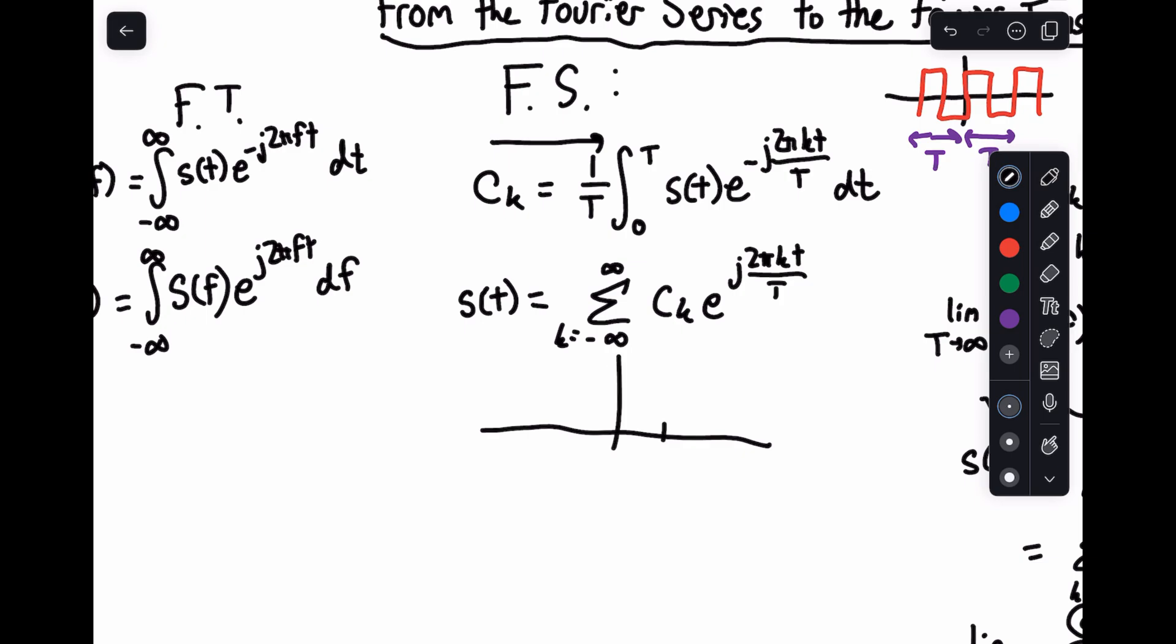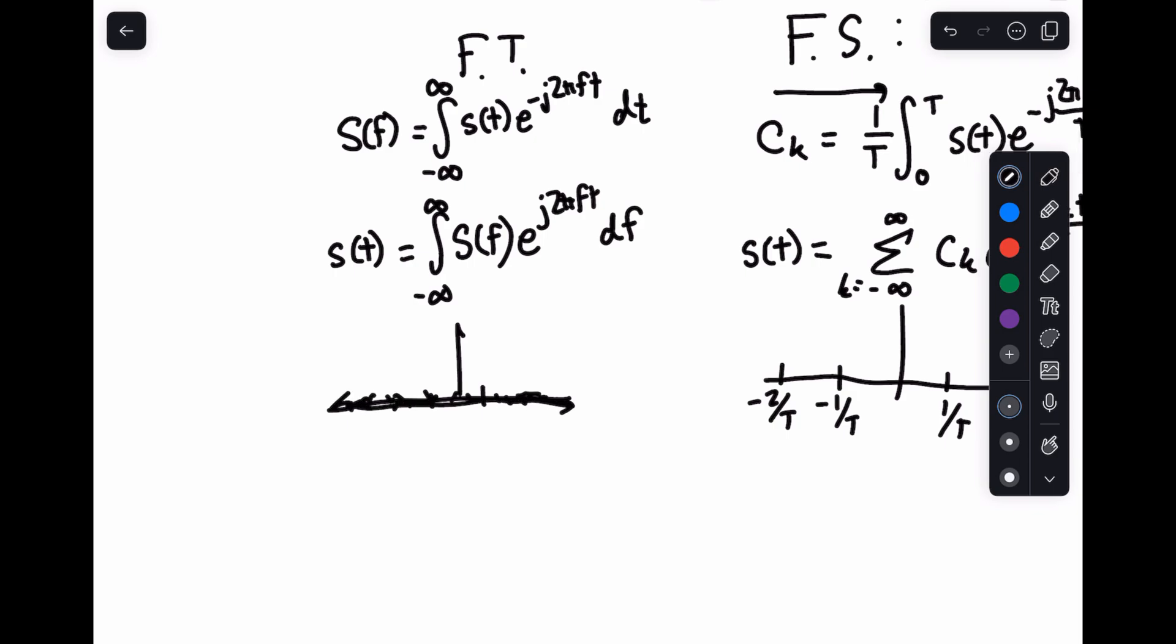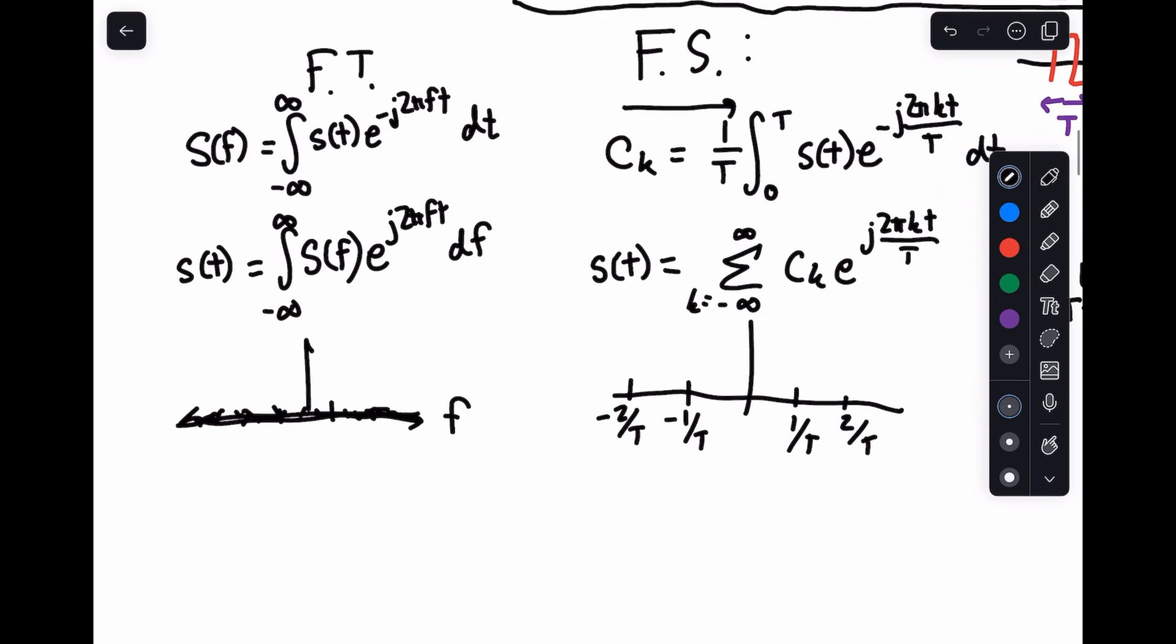So what the Fourier series did is we had our spots at 1 over T, 2 over T, minus 1 over T, minus 2 over T, etc. And what we've done is now replace these places that we've computed it with more and more points until we have a continuum here on the f axis, where we're defining f as k over T. So as we're letting T go to infinity, what ends up happening is you're kind of squishing all these together, and eventually you get this particular thing.